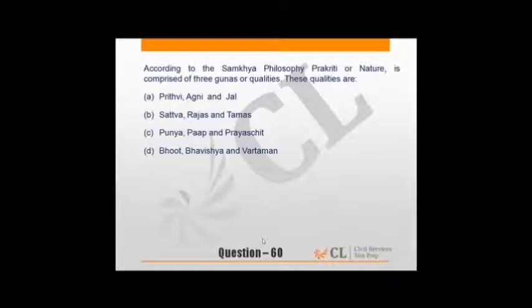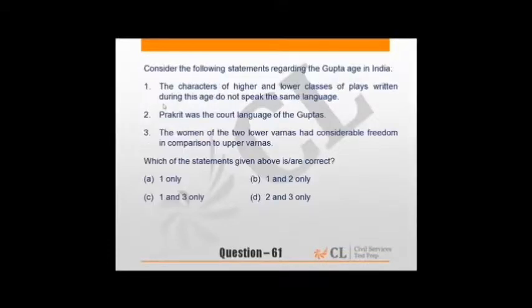According to Samkhya philosophy, Prakriti or nature is comprised of three gunas. Samkhya philosophy says the three gunas are creation, preservation and transformation, which is called Sattva, Rajas and Tamas. Following statements regarding Gupta age in India: characters of higher and lower classes in plays written during this age do not speak same language - that's correct. Prakriti was court language of Guptas - it was actually Sanskrit. Women of lower varnas had considerable freedom compared to upper varnas - correct. So 1 and 3 is correct. At that time, higher classes had language as Sanskrit as court language, lower classes used Prakriti.